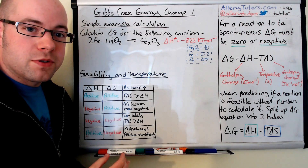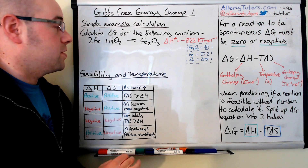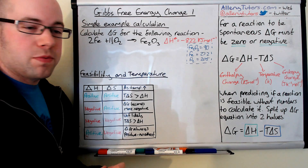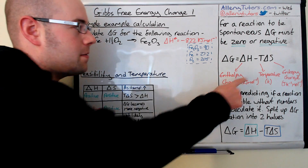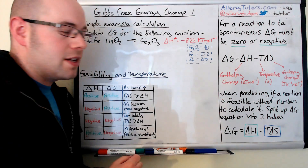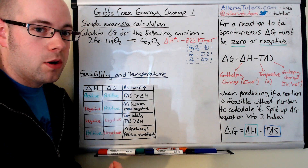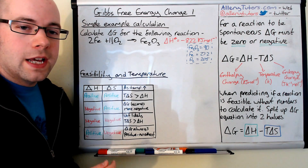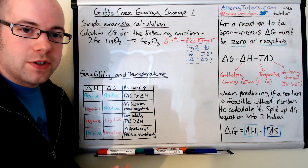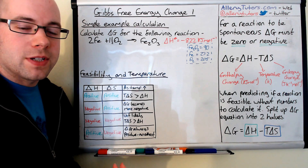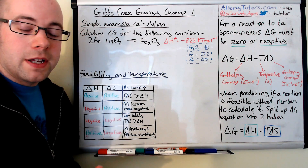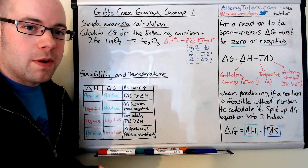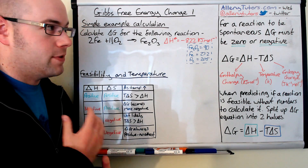To work out delta G, we first need to know delta S. This delta S is the entropy of the system only. If you're not sure how to calculate the entropy of the system, there's a link to another video below. But for this purpose, I'm going to assume you know how to do this.